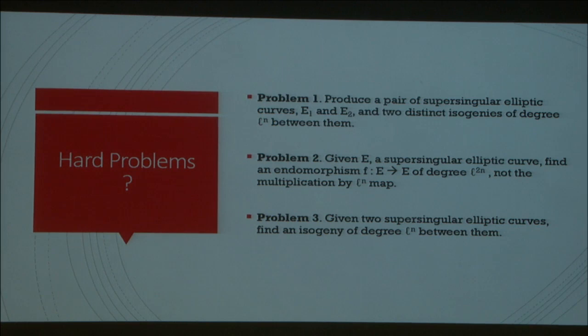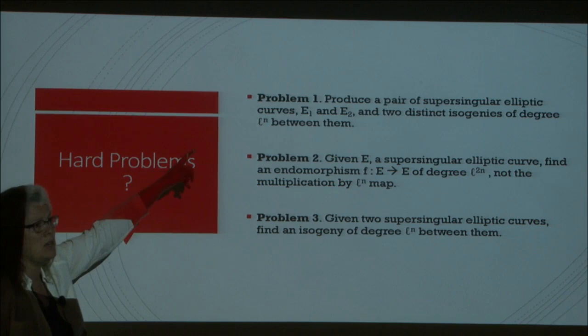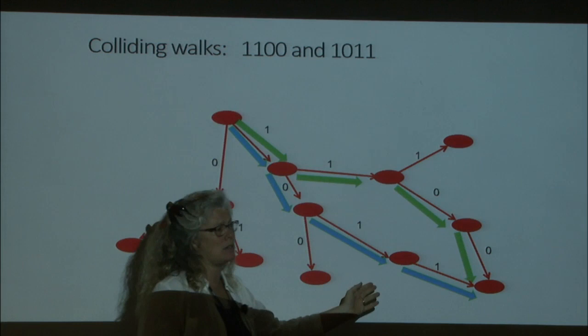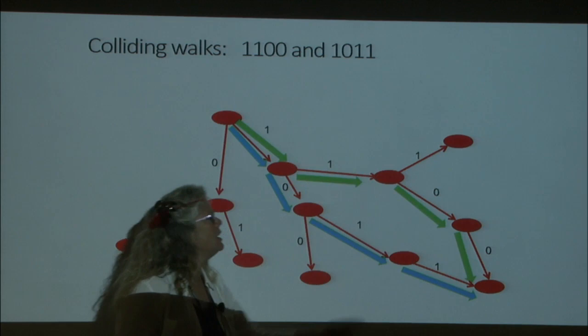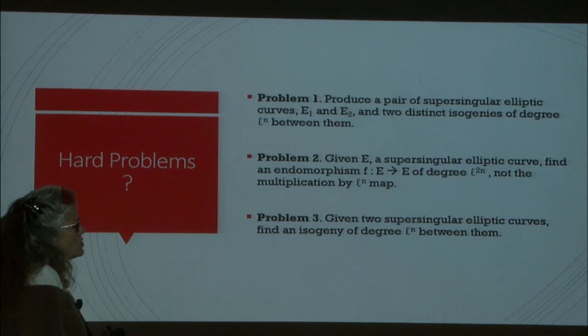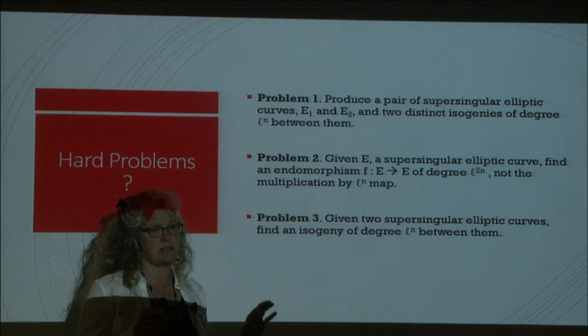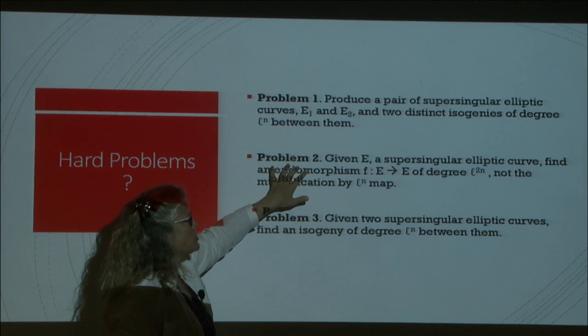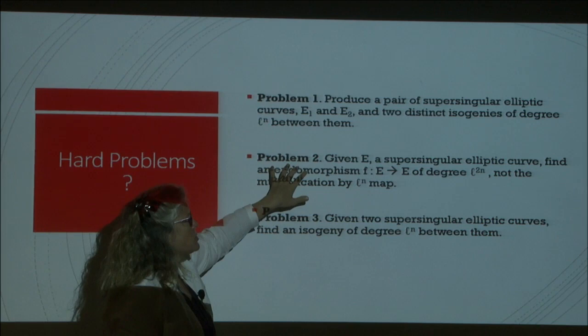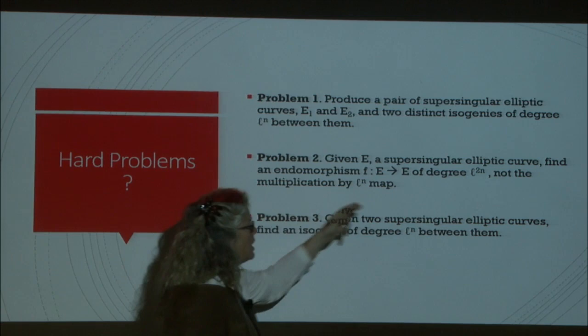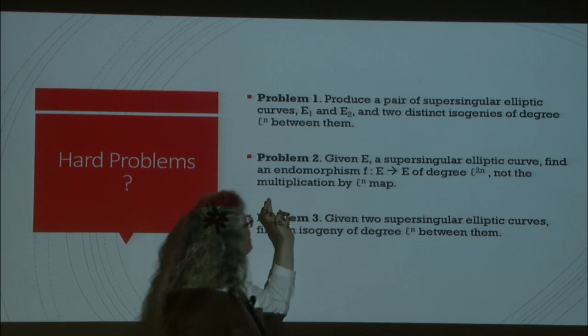We stated in our original 2006 paper: Problem 1 is to produce a pair of supersingular elliptic curves E1 and E2, and two distinct isogenies of degree L to the N between them — that's exactly two colliding walks. Problem 2: given a supersingular elliptic curve, find an endomorphism of E of degree L to the 2N (for 2N steps), which is not the multiplication by L to the N map.